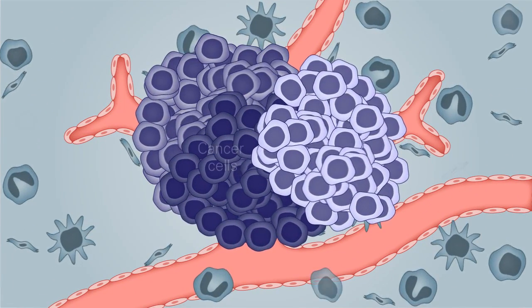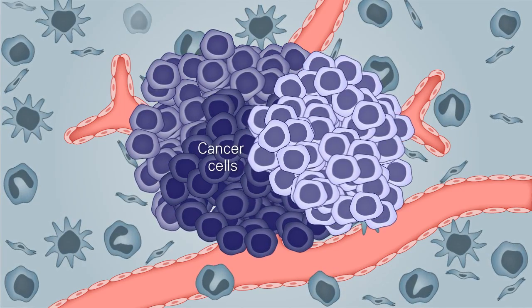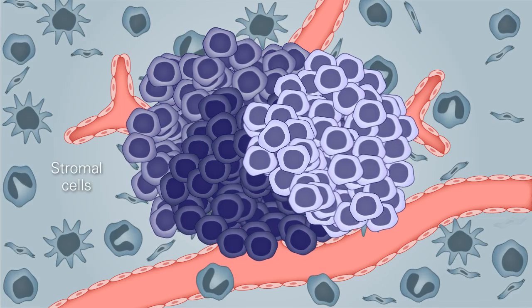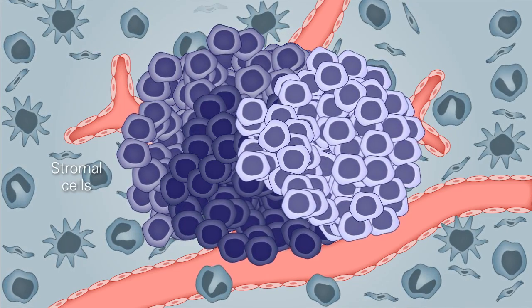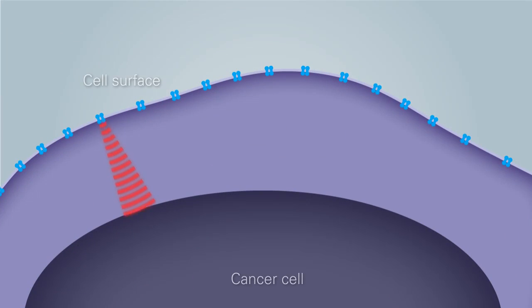The key challenge is that tumors are heterogeneous structures containing diverse cancer cell populations that interact with an intricate network of surrounding stromal cells that support tumor growth. Cells communicate with each other by molecular signaling.